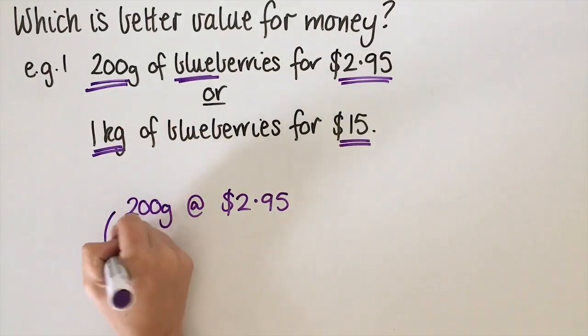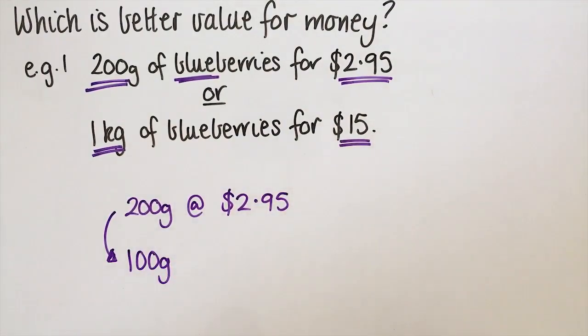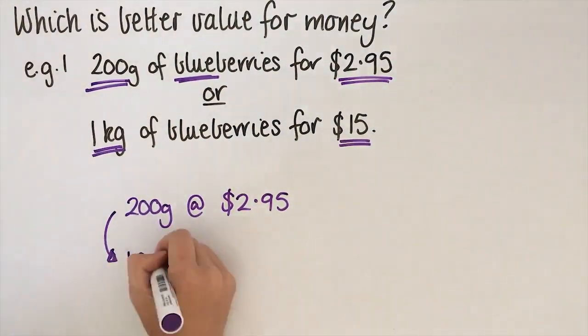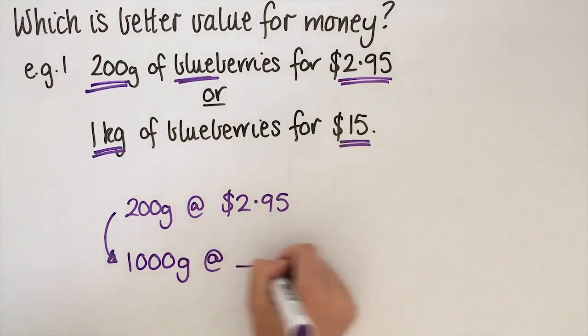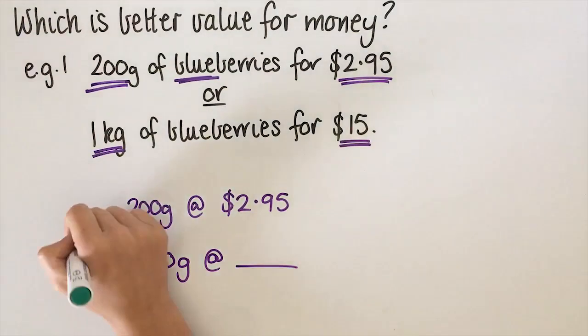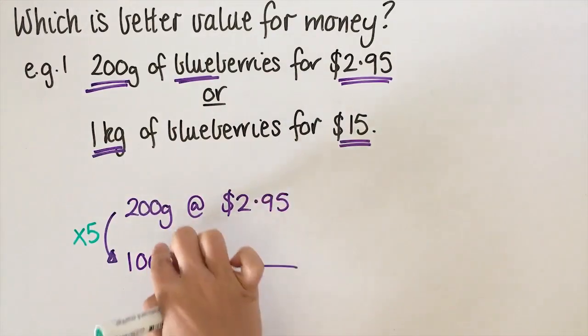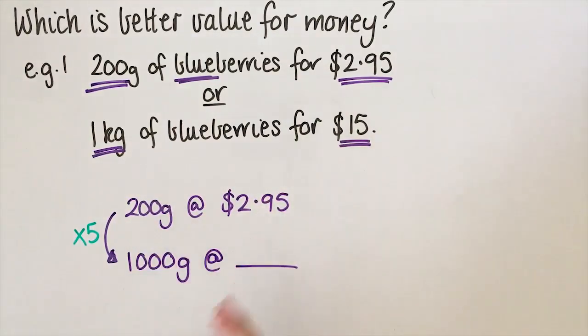We want to turn it into a kilogram, which is a thousand grams, but we don't know what this price is going to be. To get from 200 to a thousand, I actually have to times by five. 200 goes into a thousand five times. So then we have to times this side by five as well.